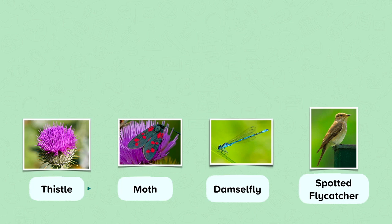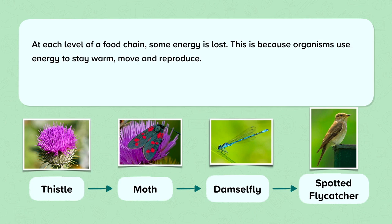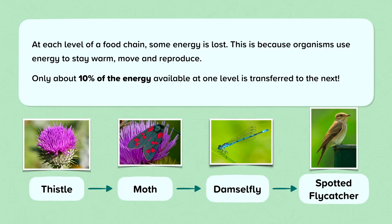Here we have another food chain: thistle, to moth, to damselfly, to spotted flycatcher. At each level of a food chain some energy is lost. This is because organisms use energy to stay warm, move, and reproduce. Only about 10% of the energy available at one level is transferred to the next.